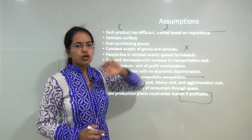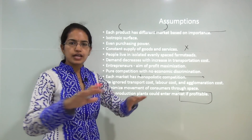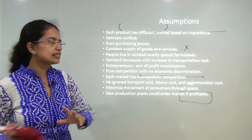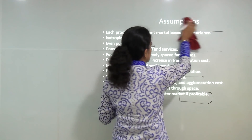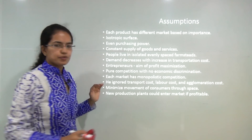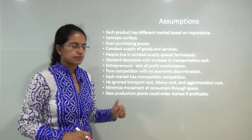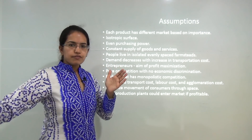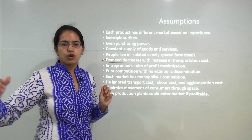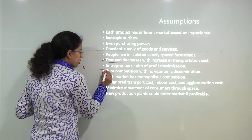The assumptions under Lösch's theory: first, space is homogenous — it is an isotropic surface, similar to the assumptions propounded by Christaller. People have uniform purchasing power. Entrepreneurs have a sole objective of profit maximization. As you move away from the city center, demand decreases because transport cost increases. So as you go away from the center where the product is, transport cost increases, which raises the price charged.